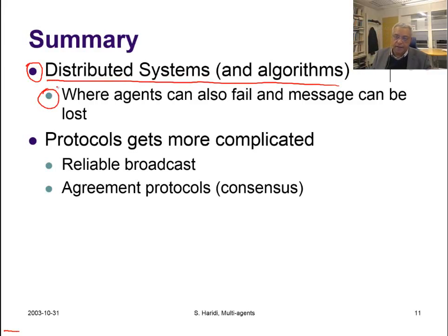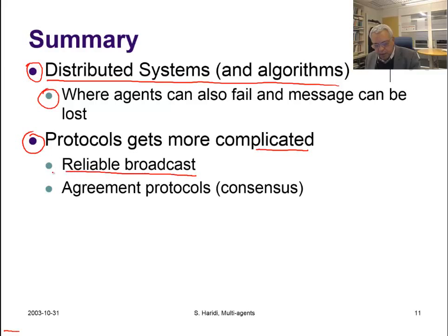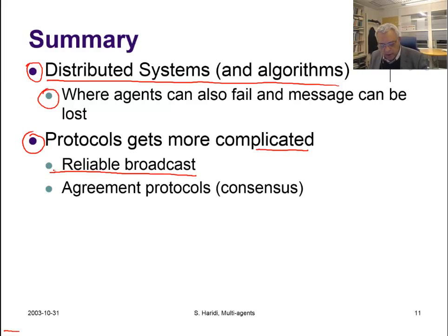What we have seen is part of concurrent programming, whereas this type of agent system is used quite often in distributed systems and distributed algorithms, where agents can also fail and messages can be lost. In such situations, the simple broadcast wouldn't work because the sender might fail after sending messages to only some agents in the group. If we want a reliable broadcast, we need a more sophisticated protocol. The contract net is a form of agreement protocol, and in general this area of agreement is quite common in distributed algorithms under the title of consensus.